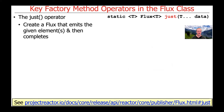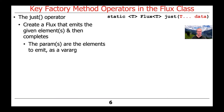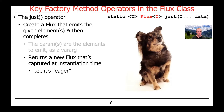Let's start out by talking about the just operator. This operator creates a Flux that emits the given elements and then completes. The parameters, which can be one or many, are elements to emit and they're provided as a varargs argument. This particular method returns a new Flux that's captured at instantiation time — in other words, it's eager.